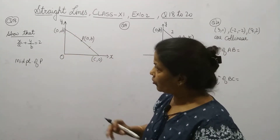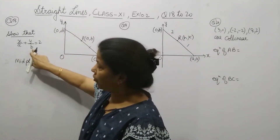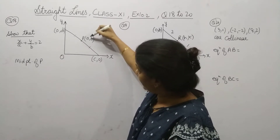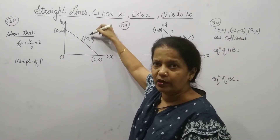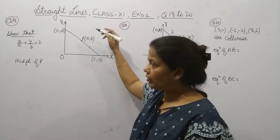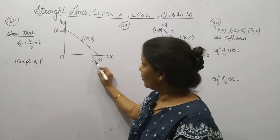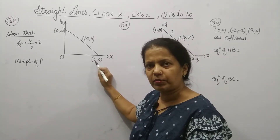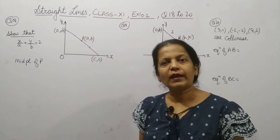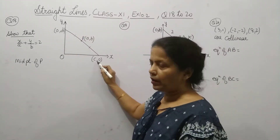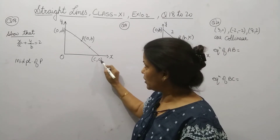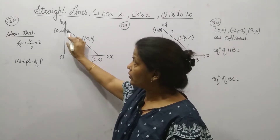We will not take (a, 0) and (0, b) here — we won't use a and b as the intercepts — because a and b are already written in the expression we need to prove. The coordinate of point P is already in terms of a and b. So we will take any other intercept form, using (c, 0) and (0, d).